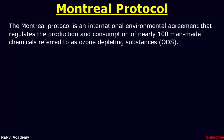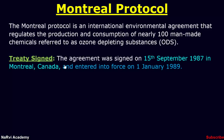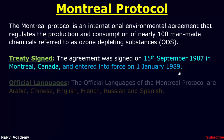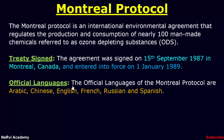The stratospheric ozone layer is the earth's protective shield that protects humans and the environment from harmful levels of ultraviolet radiation from the Sun. Regarding the treaty signing, the agreement was signed on 15th September 1987 in Montreal, Canada.